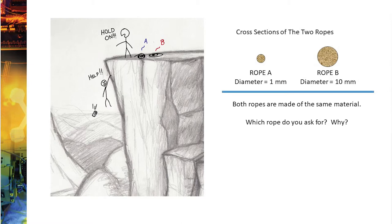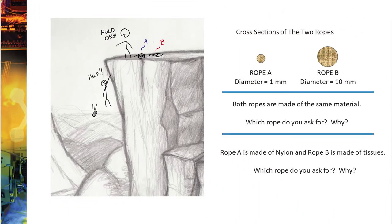Now let's tweak this question a little bit. If I told you that the ropes actually weren't made of the same materials — Rope A was made of nylon and Rope B was made of tissues — which rope would you ask for now and why? Even if the tissues were Puffs — 'a nose in need deserves Puffs indeed' — which are the world's strongest tissue, you probably would still pick A because we know that nylon is stronger than tissues.